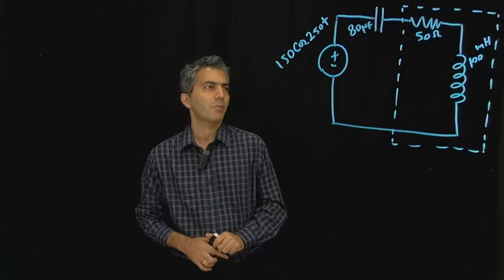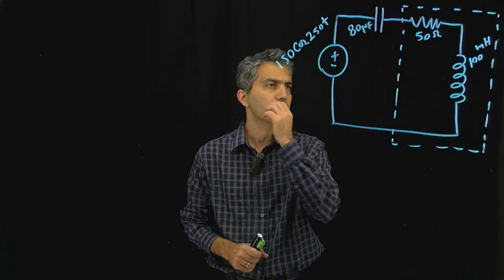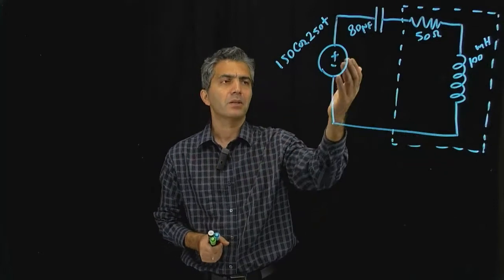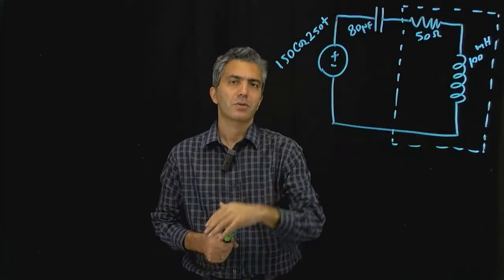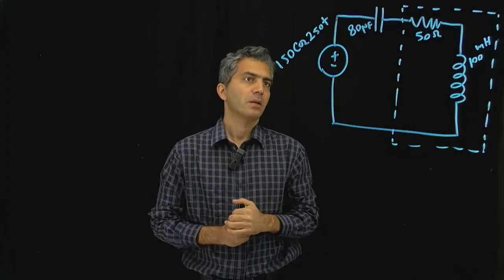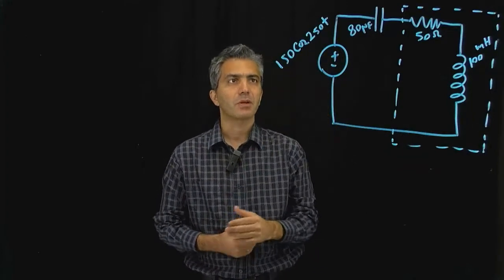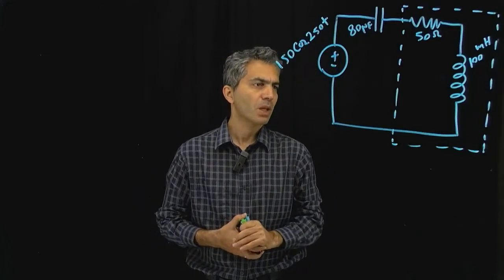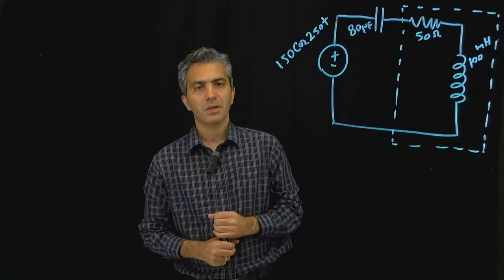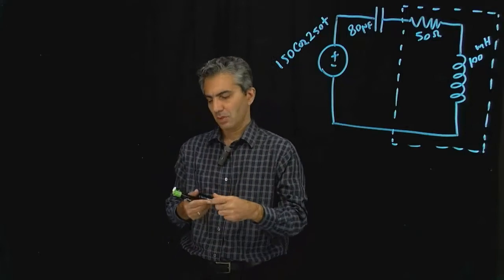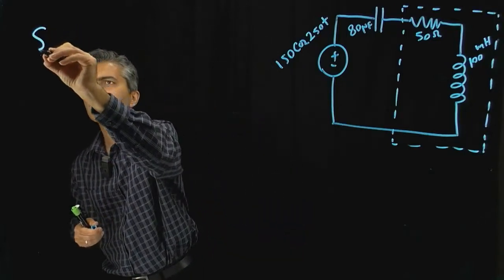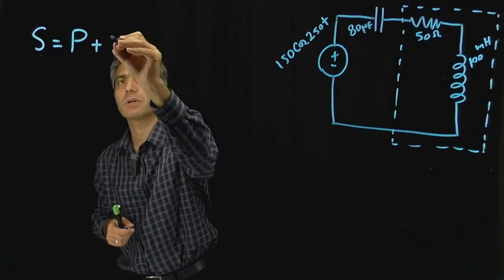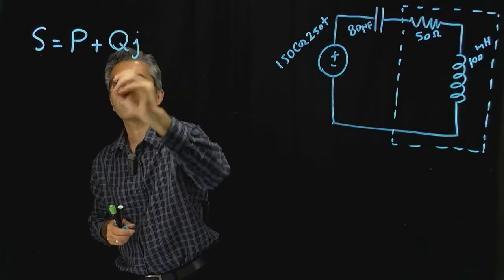Hello everyone. In this problem we're trying to calculate the power for a specific portion of the circuit that is considered the load, and the source connected to the circuit is a sinusoidal signal — a voltage source with 150 cosine 250t. We're going to use phasor domain to calculate the complex power S, where the real portion is the average power and the imaginary part is the reactive power.